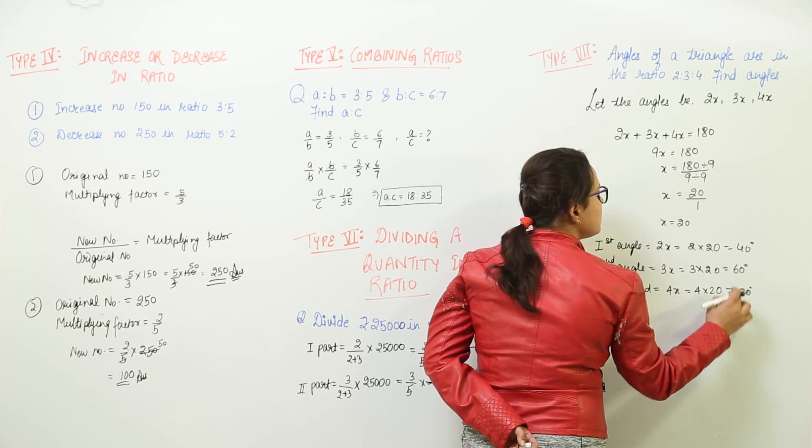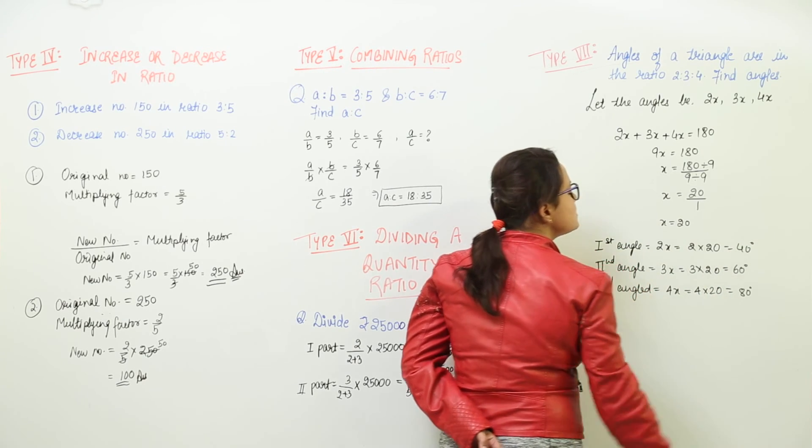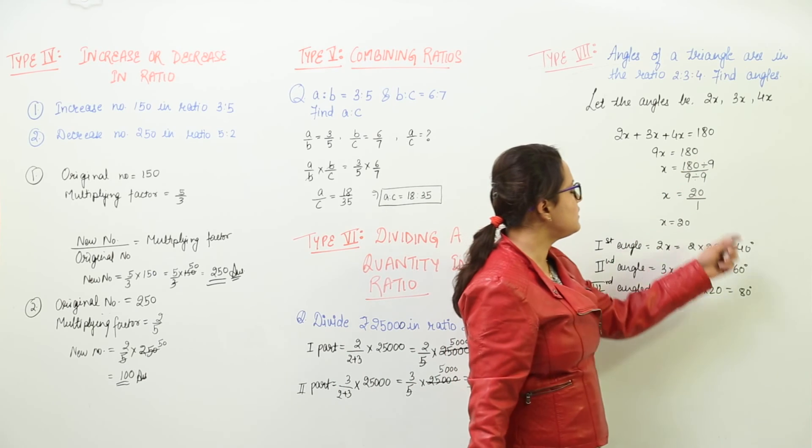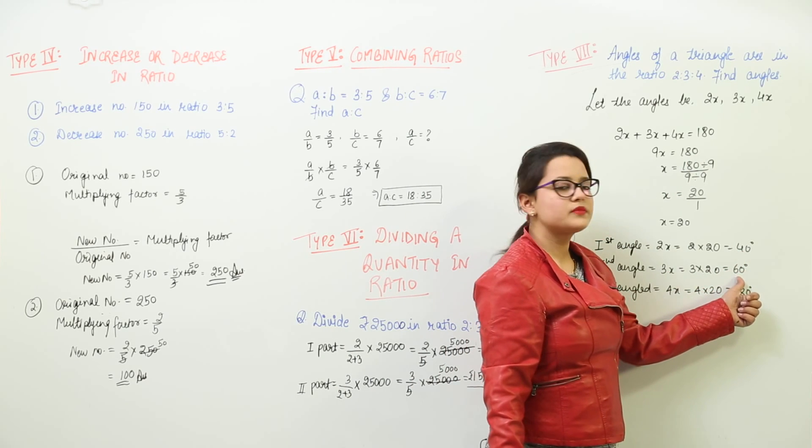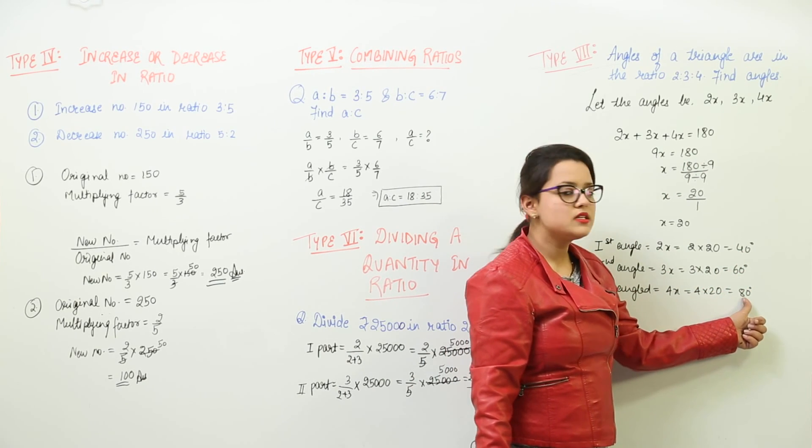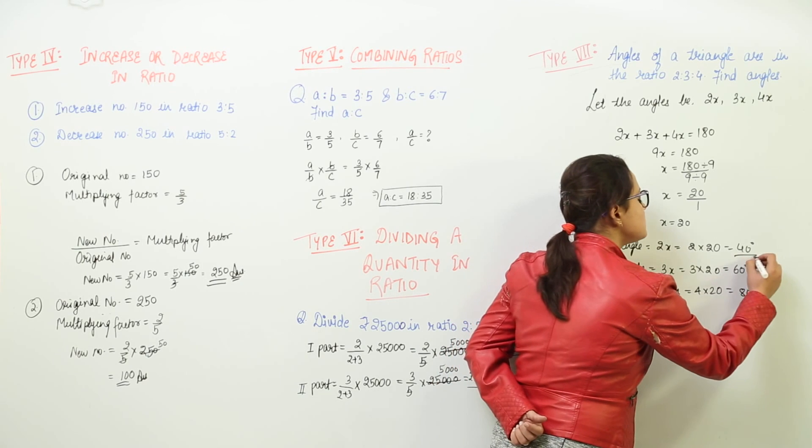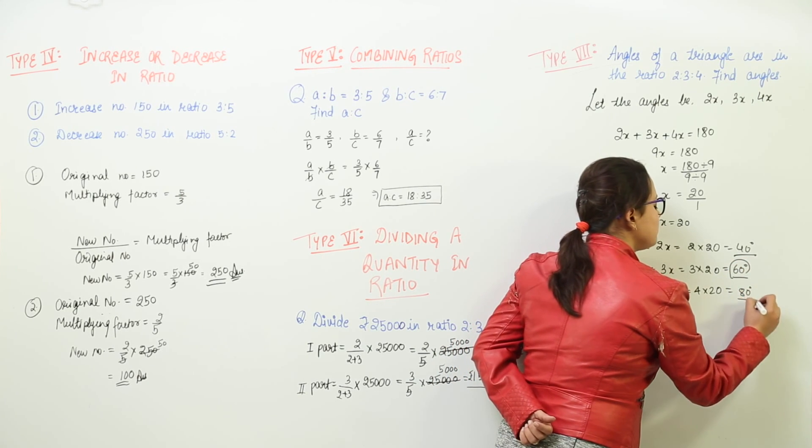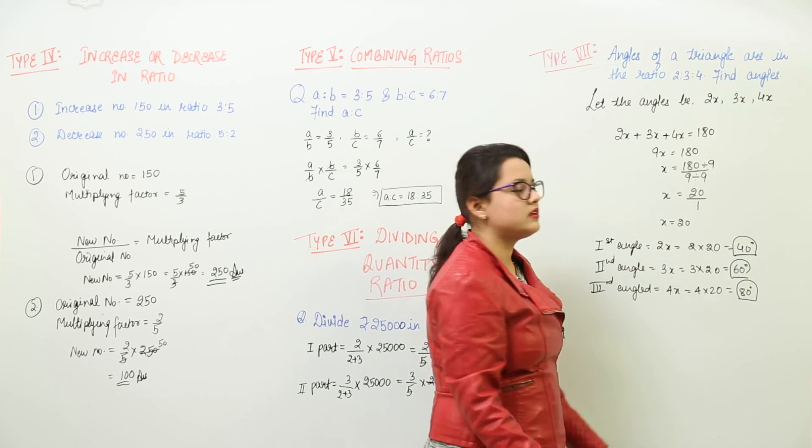Now you can check by adding all three angles together—you must get 180 degrees. 60 plus 40 is 100, and 100 plus 80 is 180. So the three angles are 40, 60, and 80 degrees.